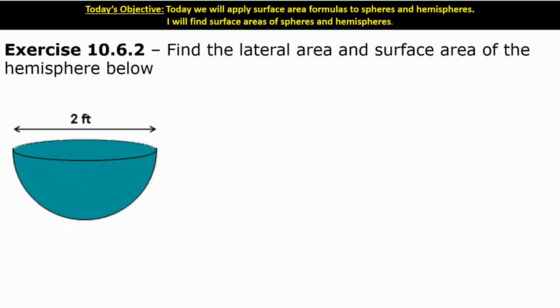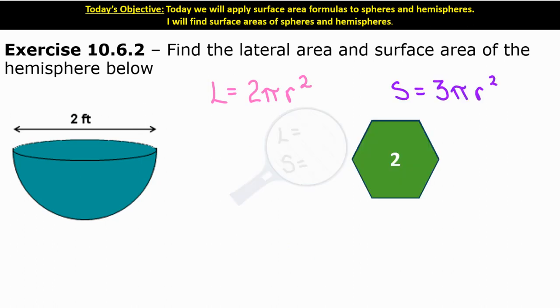All right, let's find the lateral and surface area of this hemisphere below. For my lateral area, remember it's half of 4 pi r squared, so 2 pi r squared. And for my total, then we're going to add another pi r squared to it for 3 pi r squared. Take these 2 minutes to see if you can find the lateral and total surface area of this hemisphere.